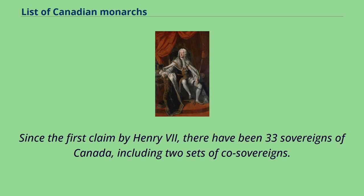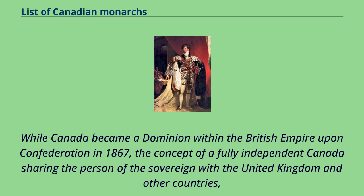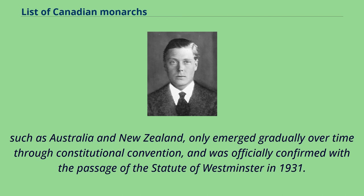Since the first claim by Henry VII, there have been 33 sovereigns of Canada, including two sets of co-sovereigns. While Canada became a dominion within the British Empire upon Confederation in 1867, the concept of a fully independent Canada sharing the person of the sovereign with the United Kingdom and other countries, such as Australia and New Zealand, only emerged gradually over time through Constitutional Convention, and was officially confirmed with the passage of the Statute of Westminster in 1931.